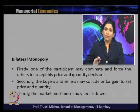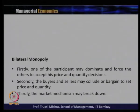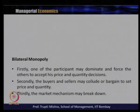Thirdly, if no one is able to dominate or the collusion is not taking place, the market mechanism breaks down and it may not exist as a bilateral monopoly. So: case one — one may dominate, the other has to follow; case two — both come to a collusion and set their price and quantity on the basis of bargaining; and case three — the market mechanism breaks down if neither of the above two are possible.